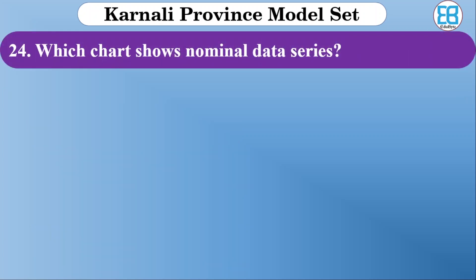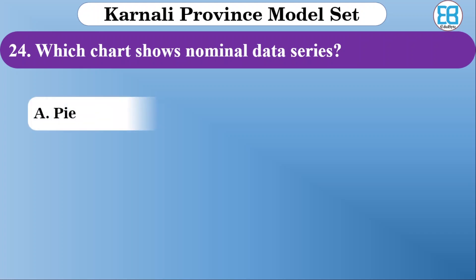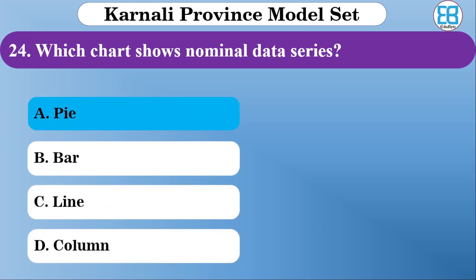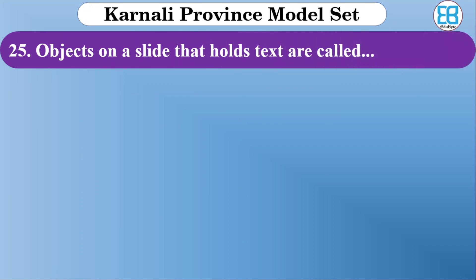Which of the following is a nominal data series? The options are start lines, column starts. The correct option is column starts. Next: what is an object on a slide that holds text? That is called a placeholder.